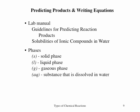The guidelines for predicting reaction products can be used to identify products in a chemical reaction. If a precipitate is formed, its formula can be determined using the table of solubilities of ionic compounds in water. Both of these resources are in the lab manual. Once all the products are identified, the reaction can be classified as precipitation, acid-base, or redox. Phases need to be properly identified in an equation. Precipitates are represented in the solid phase, and a soluble salt in the aqueous phase.